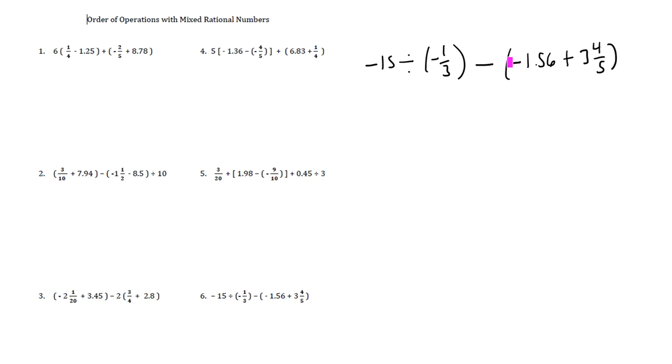Which means we are going to take care of this first. Inside this parentheses, we have a decimal and we have a fraction. I'm going to change the fraction to a decimal. And if we take four divide it by five, that's going to give us 0.8. So three and four fifths would be 3.8.